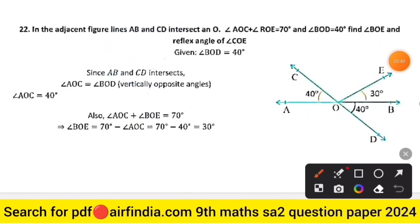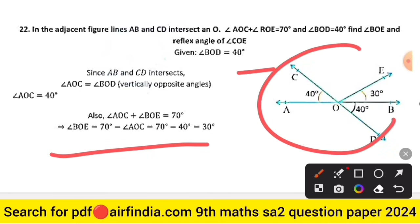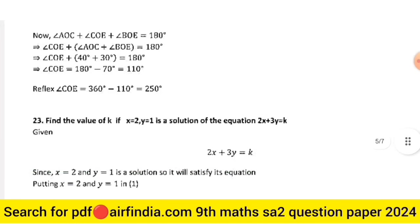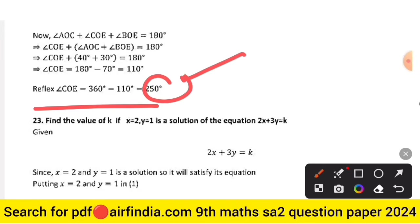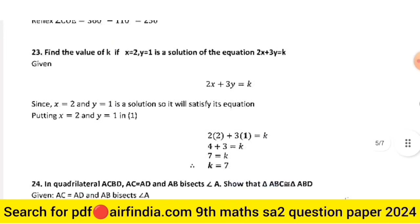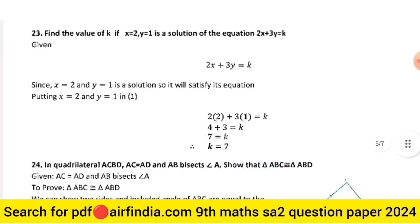Question 22: given angle BOD = 40° and reflex angle COA — the full solution is shown. Reflex angle COE = 360° − 110° = 250°. That is your answer.